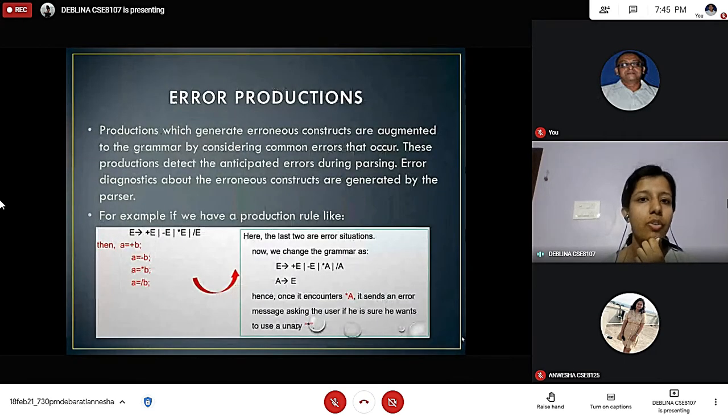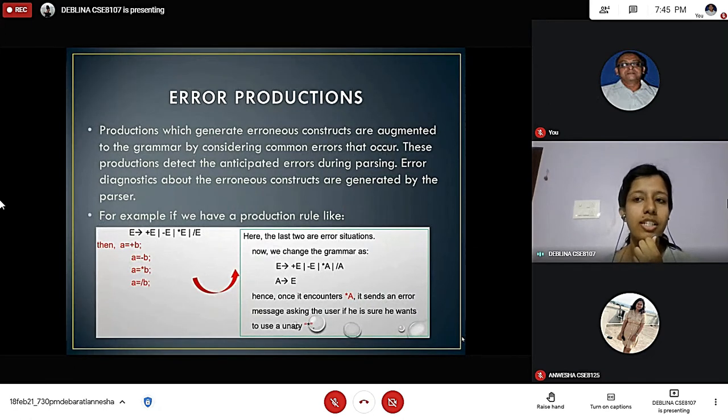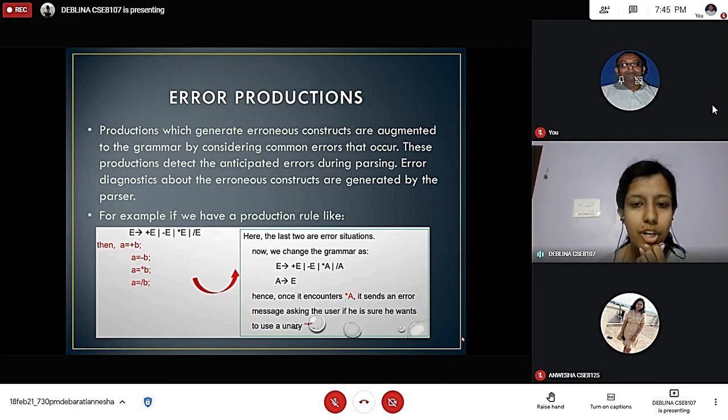Now we will talk about error productions. The productions which generate erroneous constructs are augmented to the grammar by considering common errors that occur. These productions detect the anticipated errors during parsing. Error diagnostics about the erroneous constructs are generated by the parser. Here we have an example that demonstrates error productions.